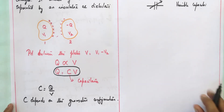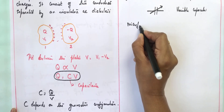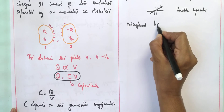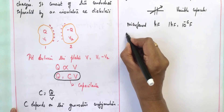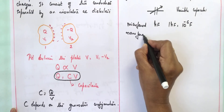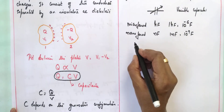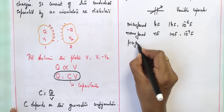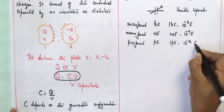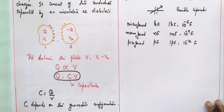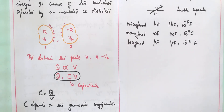The commonly used capacitor values are expressed in microfarads (μF), where one microfarad equals 10 to the power of minus 6 farads; nanofarads (nF), where one nanofarad equals 10 to the power of minus 9 farads; and picofarads (pF), where one picofarad equals 10 to the power of minus 12 farads. These sub-units are commonly used because the farad is too large a unit for practical purposes.